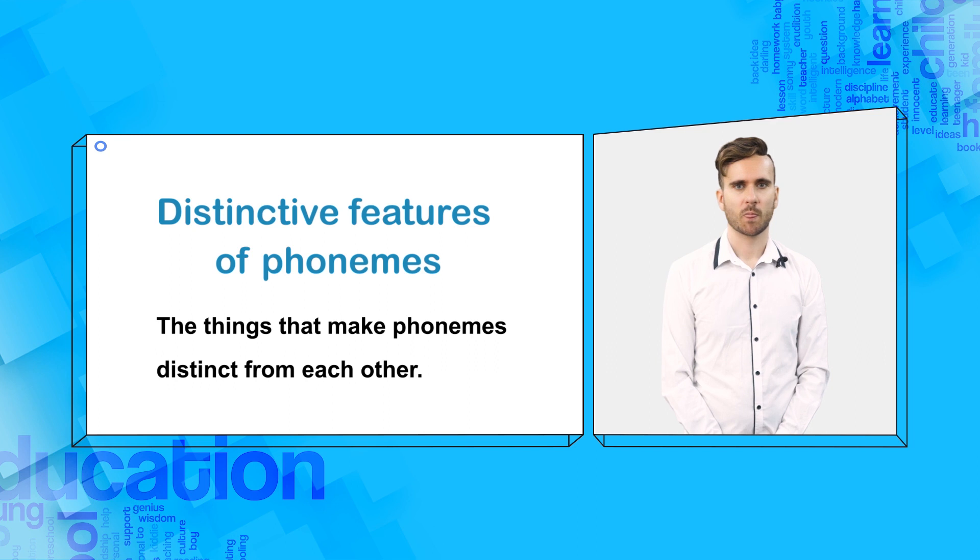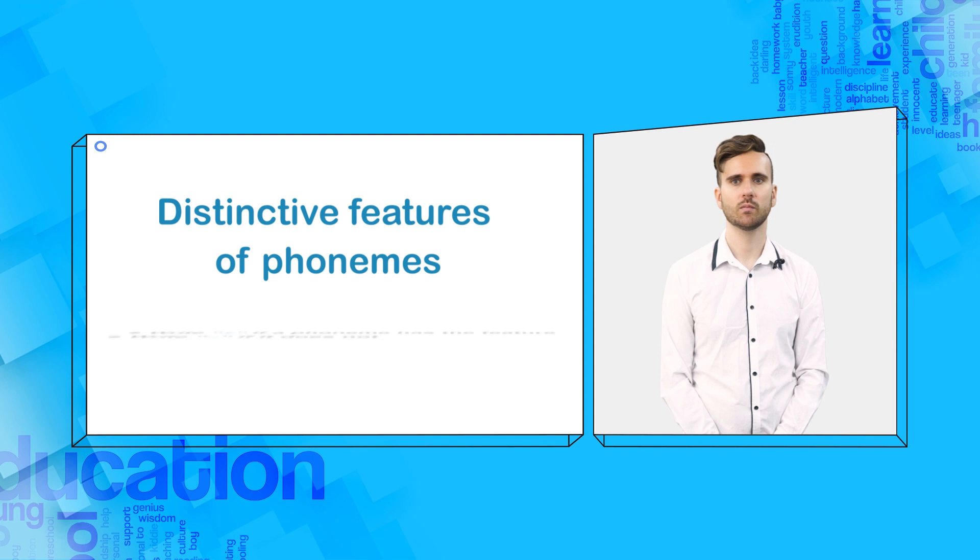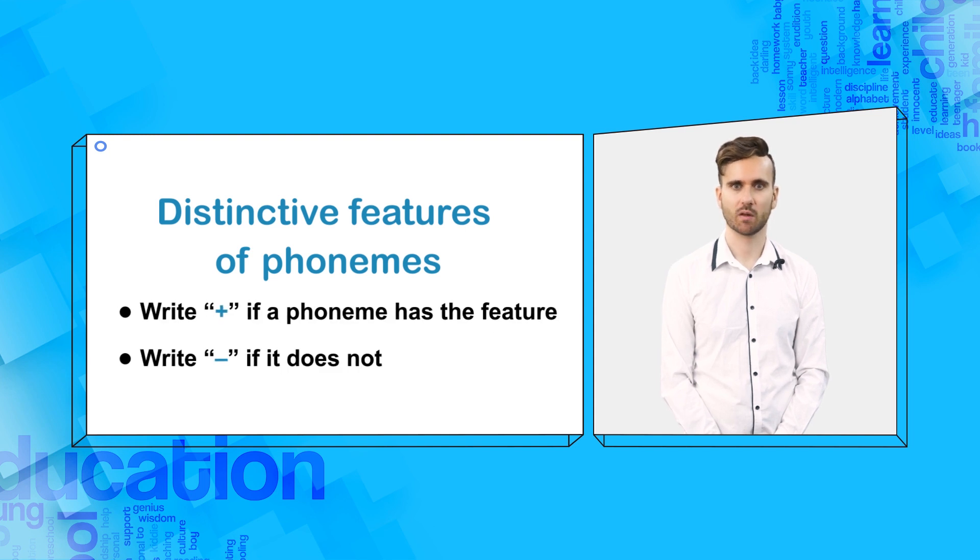For each phoneme, we can create a list of features which cause a phoneme to be that phoneme, and we put the feature inside square brackets. If a phoneme has the feature, we write a plus, and if it does not, we write minus.